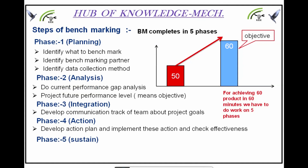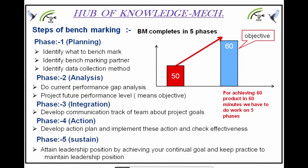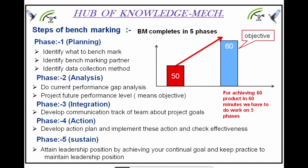Phase 5 is Sustain, meaning attain a leadership position by achieving your continual goal, and keep practicing to maintain that leadership position. After achieving our goal, we need to sustain it for some time until we set an even better next goal. So Phase 5 is Sustenance. These are the 5 phases required for working on benchmarking.